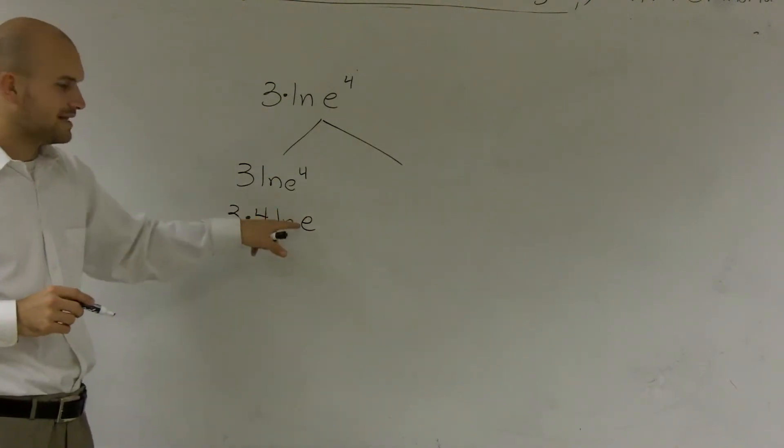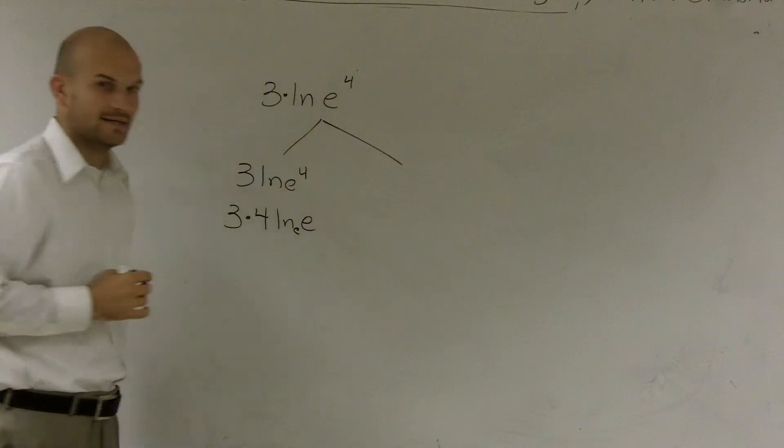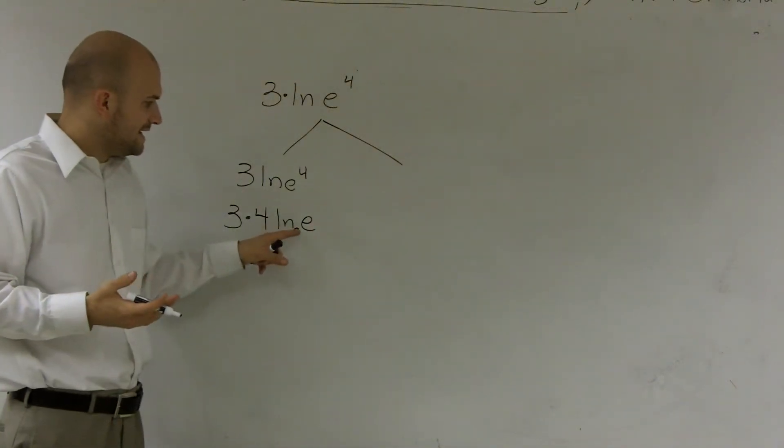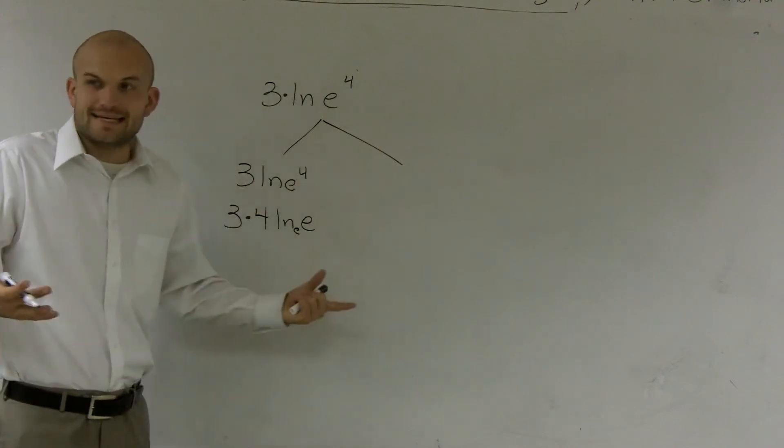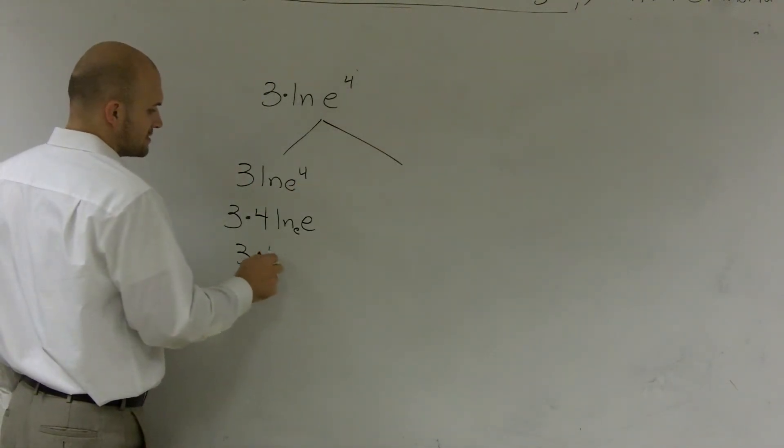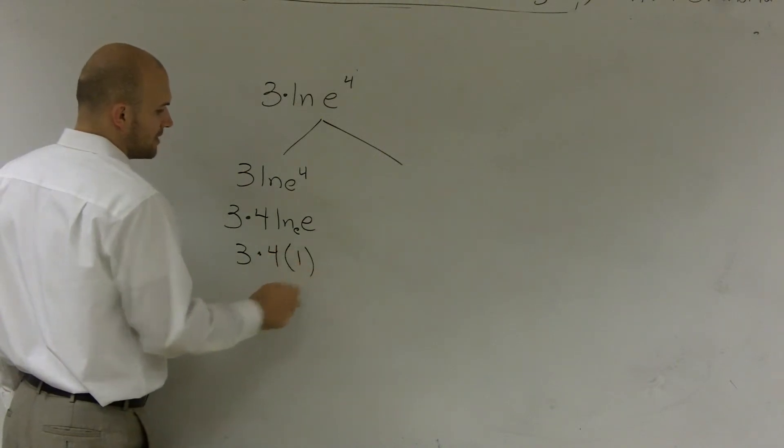Now, what is ln of e? Remember, ln has a base e. So we're asking: e raised to what number gives me e? The answer is 1. So it'll be 3 times 4 times 1, which equals 12.